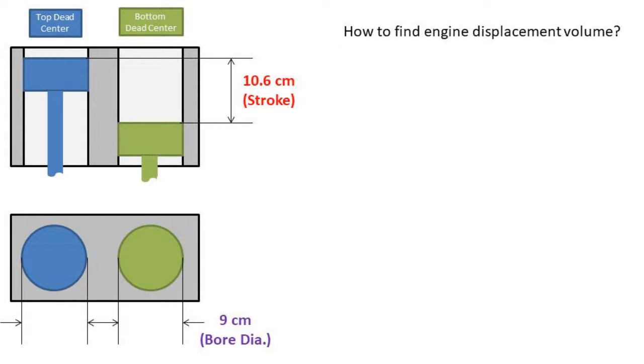We will start out by finding the engine's displacement volume. In order to find this, we will need to know the stroke length, which is the distance the piston moves back and forth. In this case, it is 10.6 cm and is marked in red.